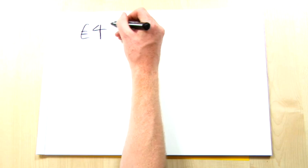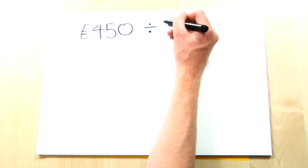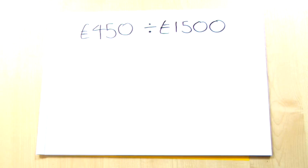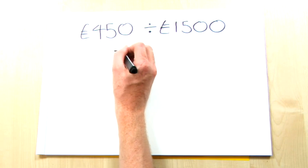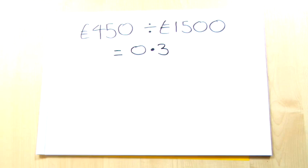Firstly, you need to take the partial amount, in this case £450, and divide it by the total amount. Again, in this case, that's £1,500. This gives you a figure of 0.3.